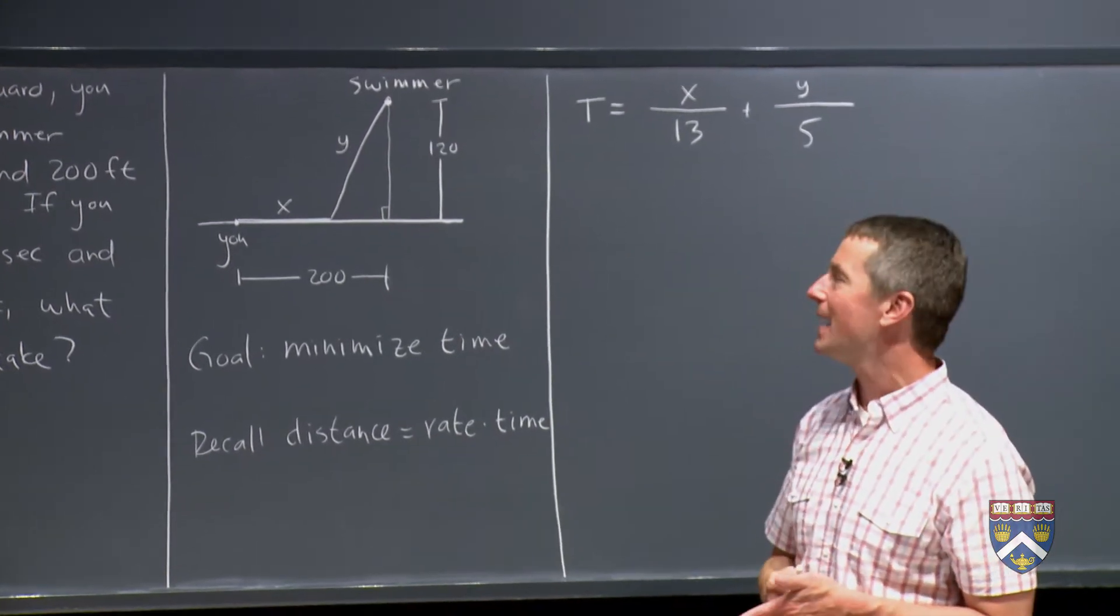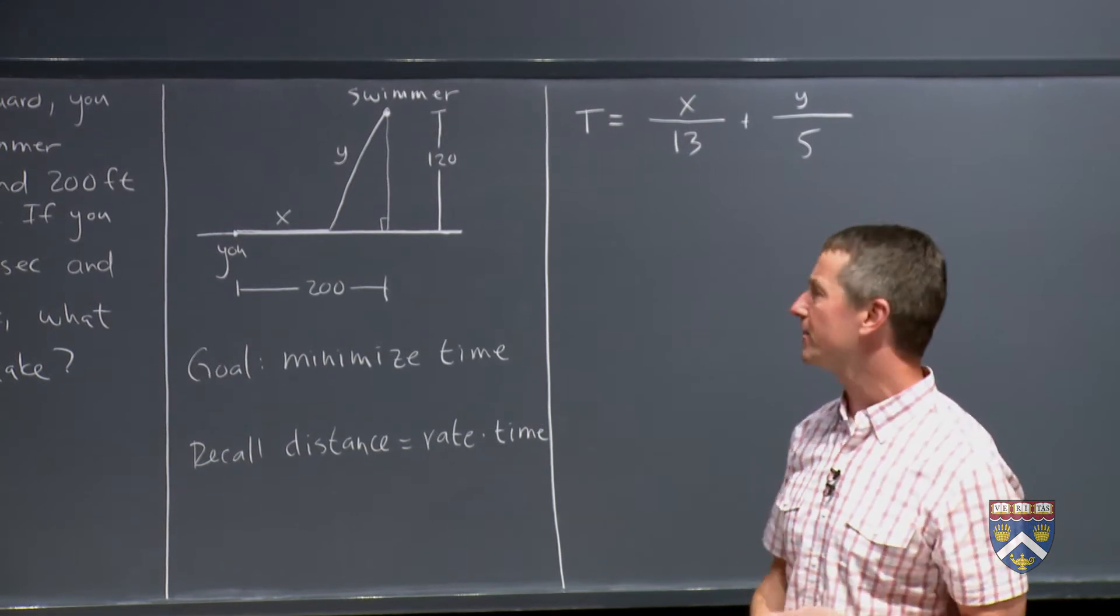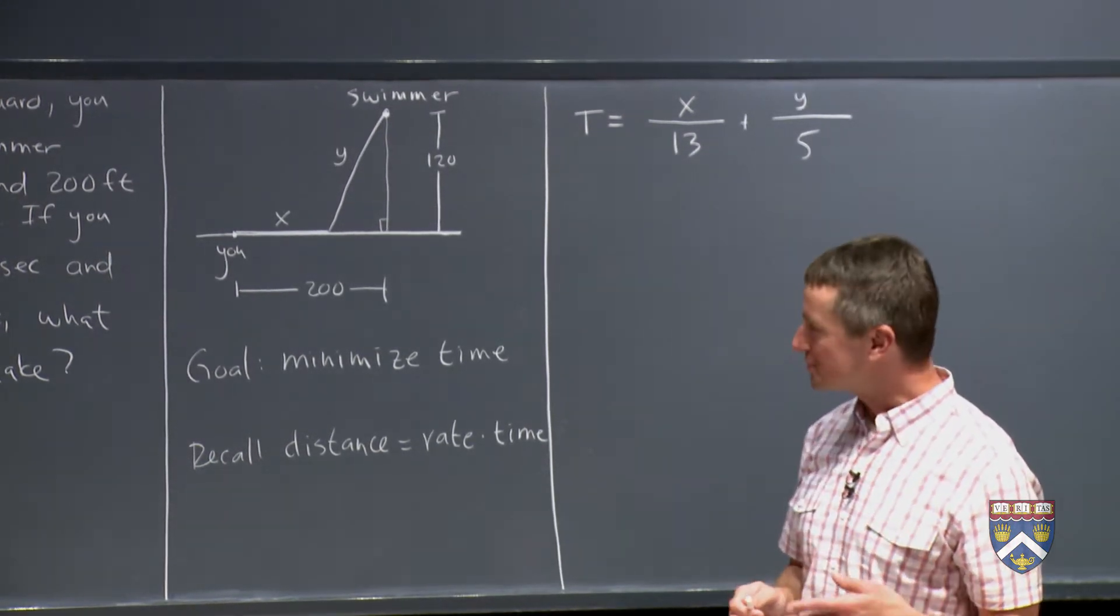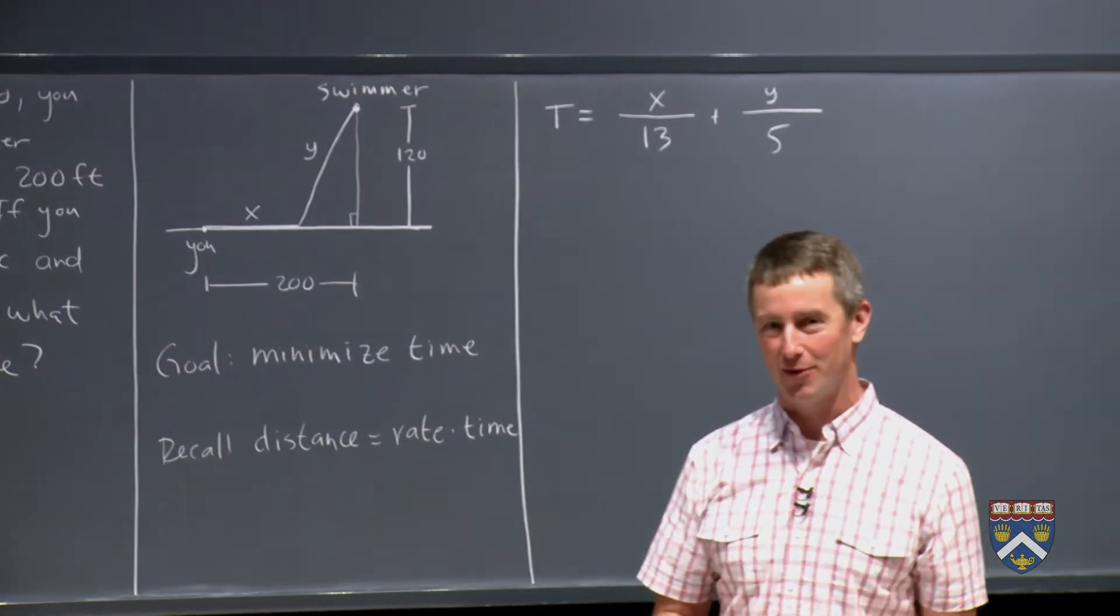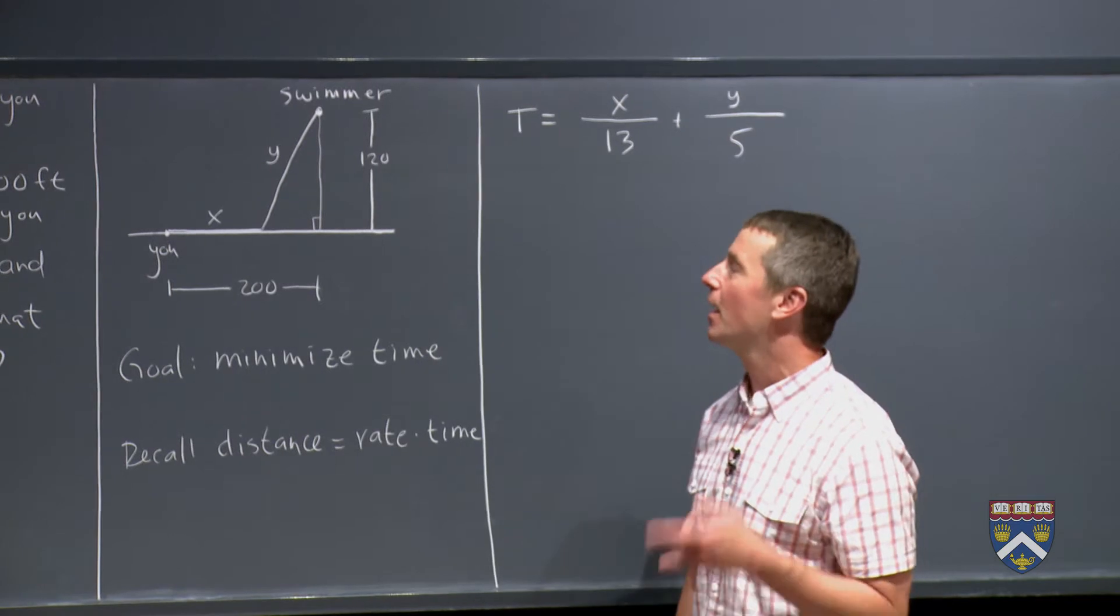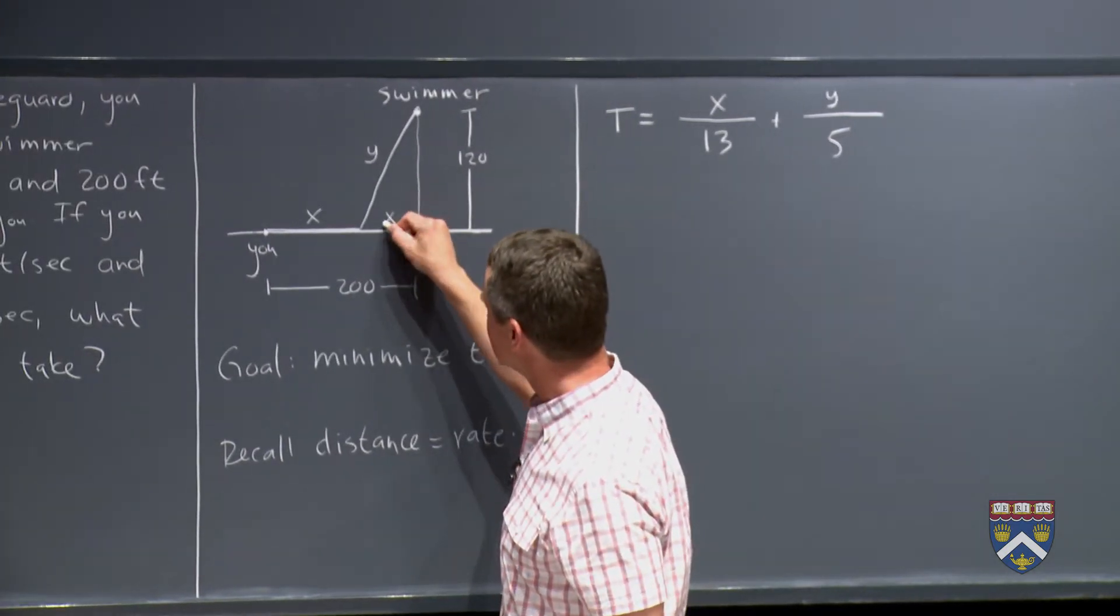And if we call that 200 minus x, that's okay. But that's going to be sort of a mess when you take the derivative, right? Because you're going to have one function inside of another function inside of another function. It'll work out okay. And most of the time that somebody does this problem on the first try, that's how they would do it. And afterwards, you realize, wouldn't it have been much easier if I had called this distance x?